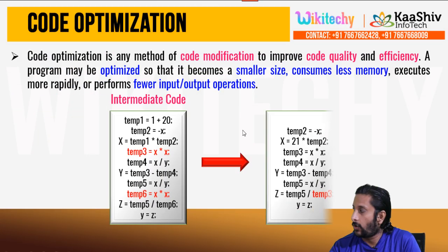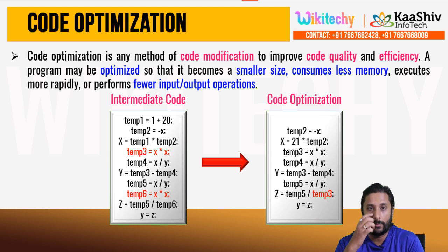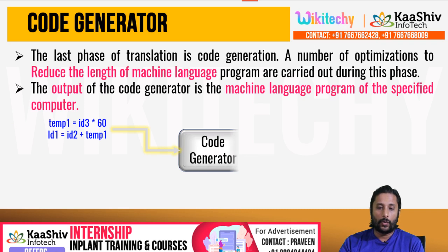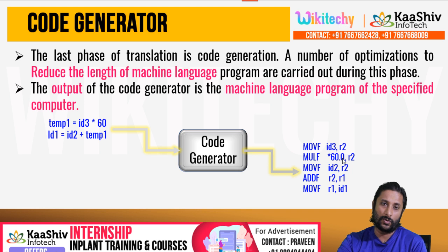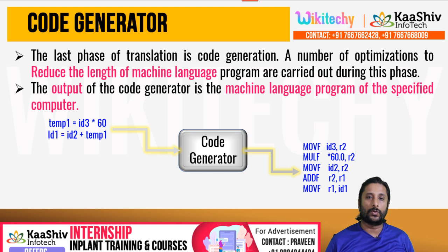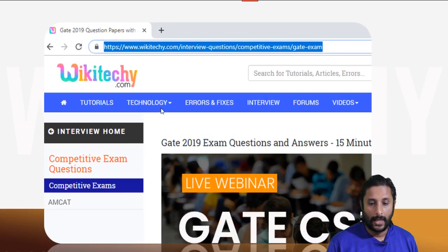Code optimization removes redundancy — if temp3 = x × x and temp6 = x × x, remove temp6 and use temp3. This reduces code size, consumes less memory, and executes faster. Finally, the code generator produces assembly language code, which the assembler converts to machine code (zeros and ones) for execution. For more videos, visit the WikiTiki Code YouTube channel or the URL provided for text-format content.